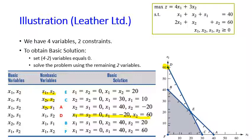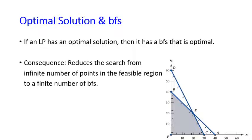Points a and d are not in the feasible region — the shaded area — and correspondingly they are not basic feasible solutions because they have negative variable values. This illustrates the theorem: extreme points b, e, c, and f in the feasible region all correspond to basic feasible solutions, while a and d are neither extreme points nor basic feasible solutions.